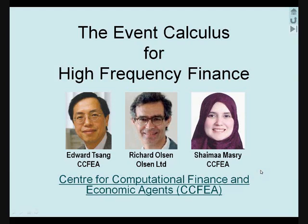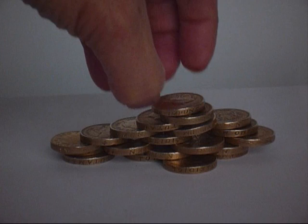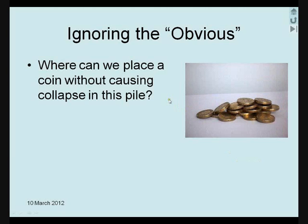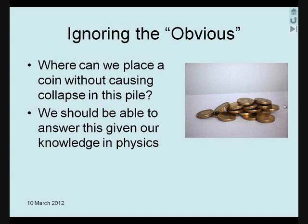Suppose you have a pile of coins and you add one coin to it at a time. Sometimes, when a coin is added, nothing much is changed. But sometimes, adding one coin can change the structure of the pile. Suppose we want to know the consequences of adding a coin to different positions of this pile. Given our knowledge in physics, if we know everything about this pile, we should be able to answer our question.